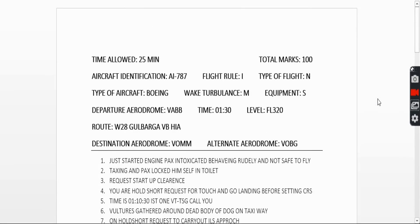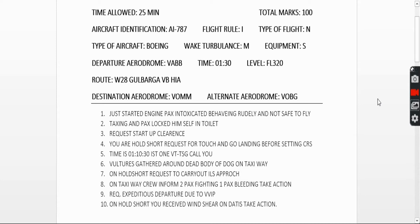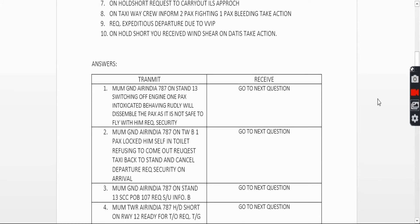Second question: you are taxiing and one passenger has locked himself in the toilet. In that situation, the communication goes like this — 'Mumbai Ground, Air India 787 on taxi Alpha Bravo, one passenger locked himself in toilet refusing to come out, request taxi back to stand and cancel departure, request security on arrival.' Remember the format: station calling, your position, situation, and action.